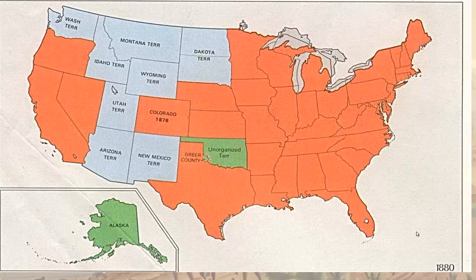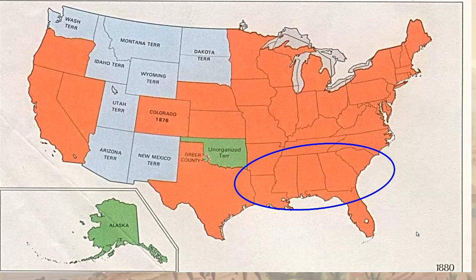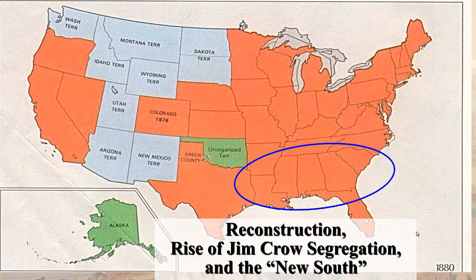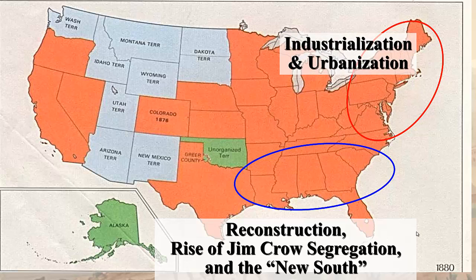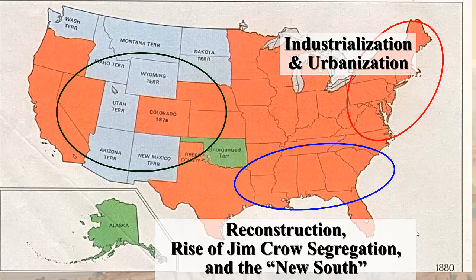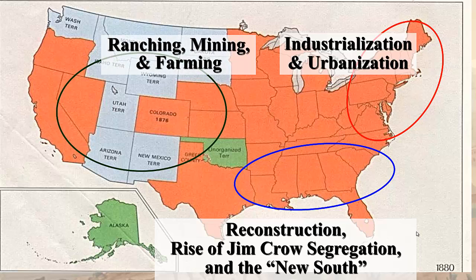Here's a map of the United States showing territories, with red areas as states — I believe this is as of 1880. Our three areas are the same sections we talked about with sectionalism. The South focuses on Reconstruction, the rise of Jim Crow segregation, and the New South. New England and the upper East Coast are the 'izations' — industrialization, urbanization, and immigration. In the West, we'll be talking about ranching, mining, and farming, as well as the impact on Native Americans.